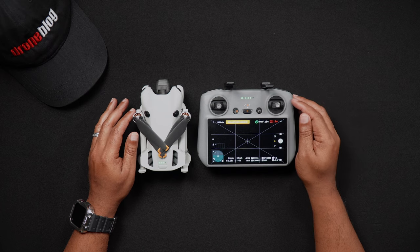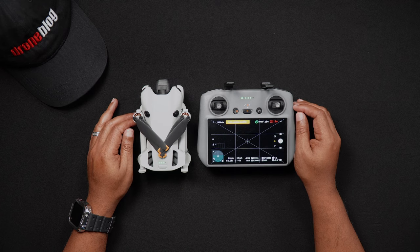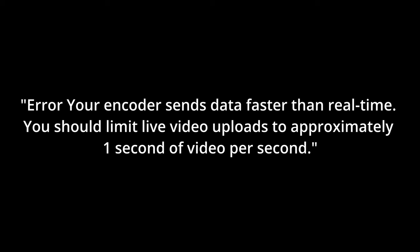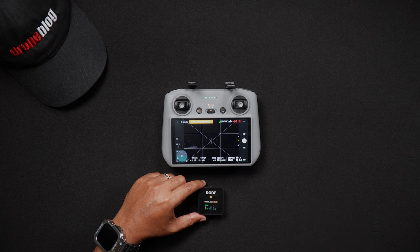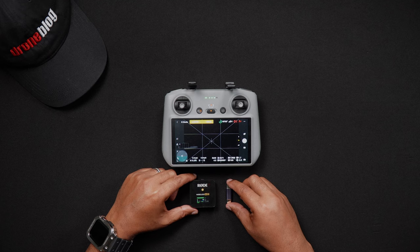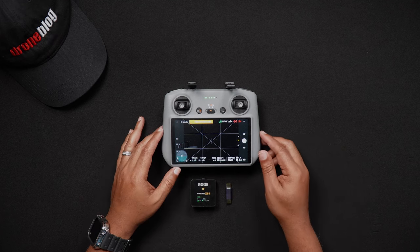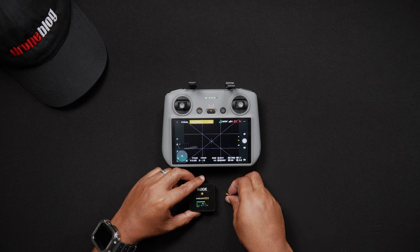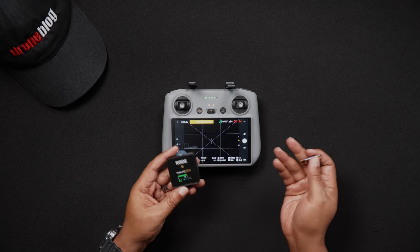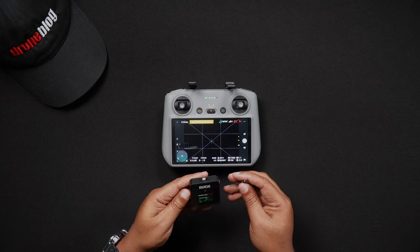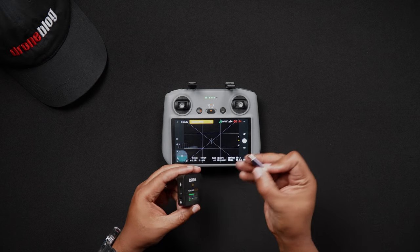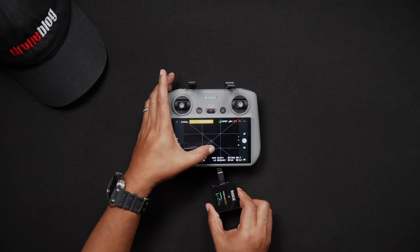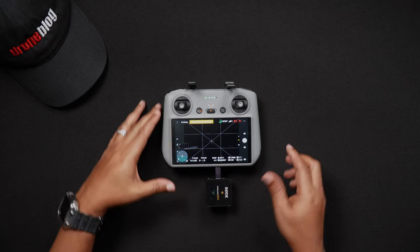If you're using the all-in-one DJI RC2 controller to live stream and you're noticing that it's choppy, or you get the error message 'your encoder sends data faster than real time — you should limit live video uploads to approximately one second video per second,' there is a workaround or fix for this. As detailed by DJI support reps, you can attach a USB-C microphone to the RC2's USB slot on the bottom of the controller. We would suggest using a DJI Mic or DJI Mic 2, which easily attaches to and works seamlessly with the DJI RC2. However, there are some users that use various lines of the Rode Go mics — all you would need is a male-to-male USB-C adapter and connect the Rode receiver to the DJI RC2.